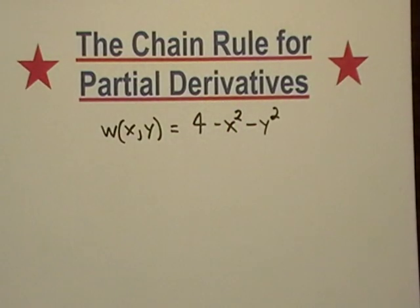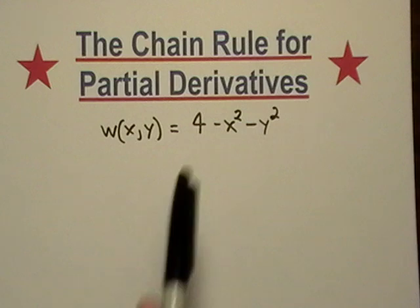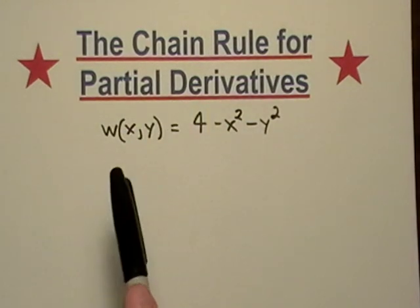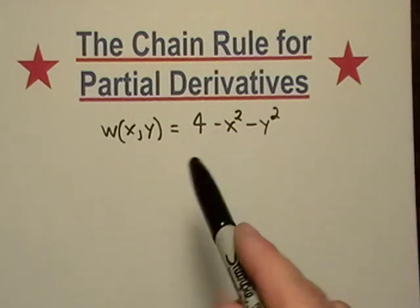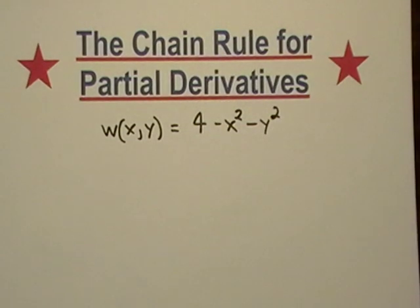So if I wanted to describe how it's changing, I would use partial derivatives. The partial with respect to x and partial with respect to y are really simple: negative 2x and negative 2y are the partials for this.